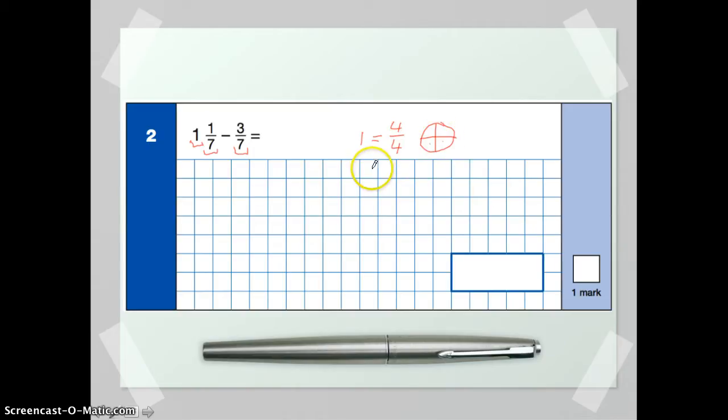So in the same way, if our circle is split up into seven pieces, one would be the same as seven over seven. Because out of our whole circle, we split it up into one, two, three, four, five, six, seven. So seven out of seven pieces is a whole.